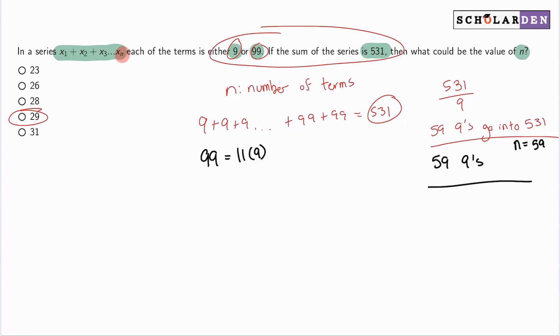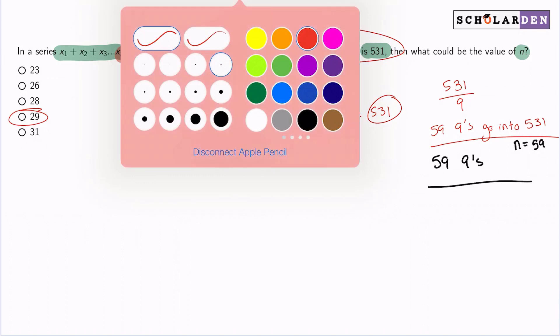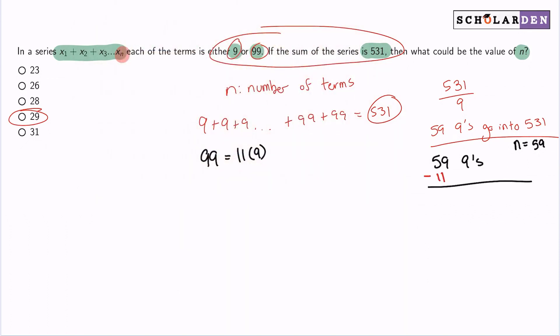Up next, what I can try out, well, I said every 11 nines can be replaced by 99. So if I take away 11 of these 9s, I'll end up with 48 nines. And then I'll have 1 ninety-nine. So n now is 49.